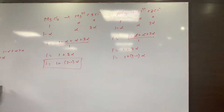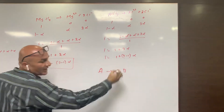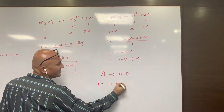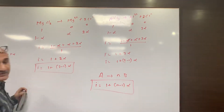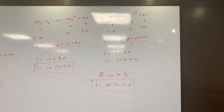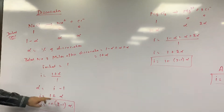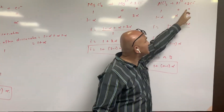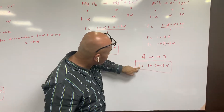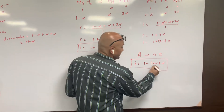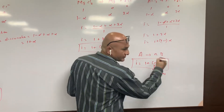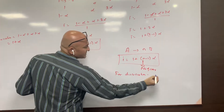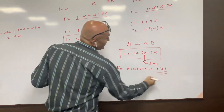So basically, if anything is dissociating and giving you n particles total, just remember: i = 1 + (n − 1)α. This is a powerful formula to remember. For NaCl we get 2 ions, so (2 − 1); for MgCl₂ we get 3 ions, so (3 − 1); for AlCl₃ we get 4 ions, so (4 − 1). The formula is i = 1 + (n − 1)α, where n is the number of ions produced.